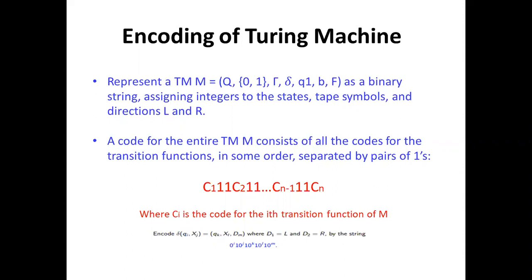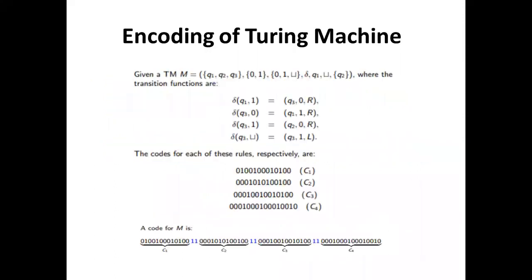As a binary string, we assign integers to the states, tape symbols, and directions left and right. A code of the entire Turing machine consists of all the codes for the transition function, separated by pairs of ones. In our example, the Turing machine has states q1, q2, q3; input symbols 0 and 1; tape symbols 0, 1, and blank; and delta is the transition function. q1 is the initial state, blank is v, and q2 is the set of final states.